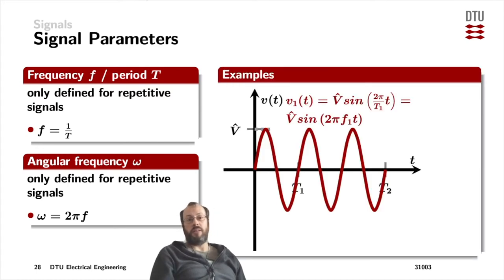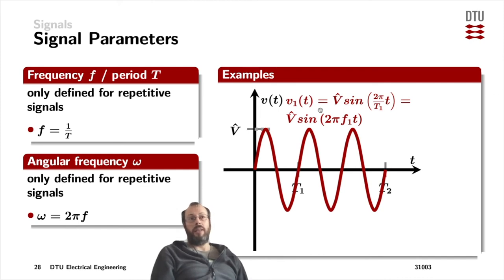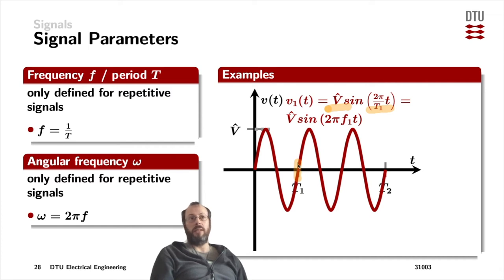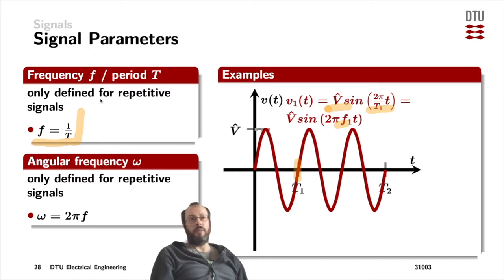Let's have a look at an example. We've got a voltage V1, defined as V-hat — where V-hat is the amplitude of the sine wave — and it has a frequency of 2 times pi divided by T1, which is the repetition period of the first signal. We could also rewrite that as V-hat times the sine of 2 pi times frequency 1 times T, since frequency 1 is 1 divided by T, where the lowercase t is the variable.